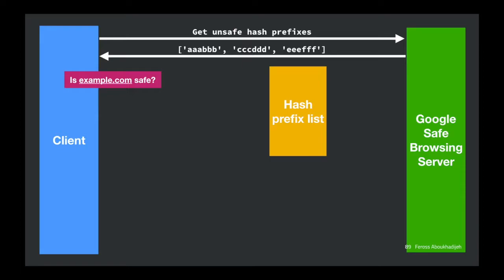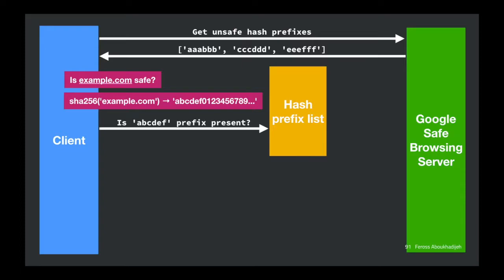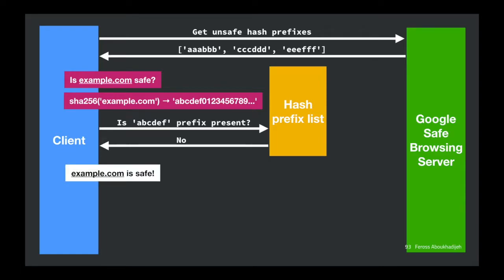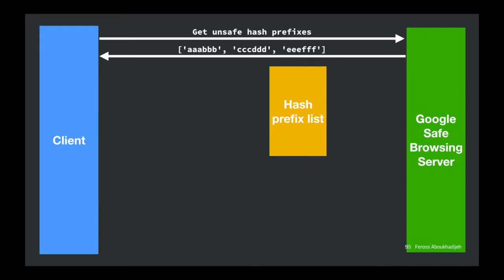When we want to check if a URL is safe, we put it through SHA-256, get a hash value, chop off the same prefix length that Google used, and look to see if it's in the list. If it's NOT in the list, we know it's guaranteed safe — because Google gave us the prefix of every suspicious URL. So in the normal case, we can quickly go ahead and load the URL the user requested.